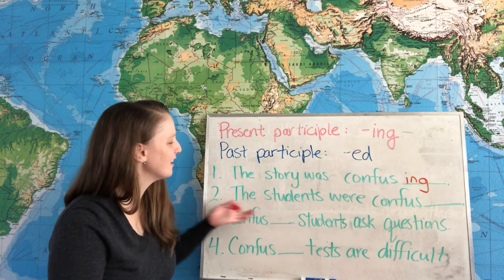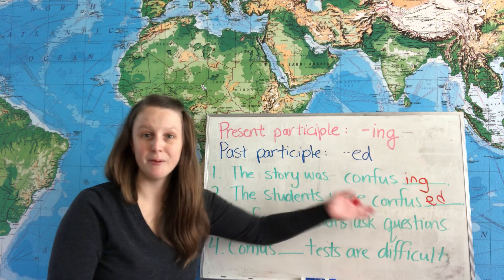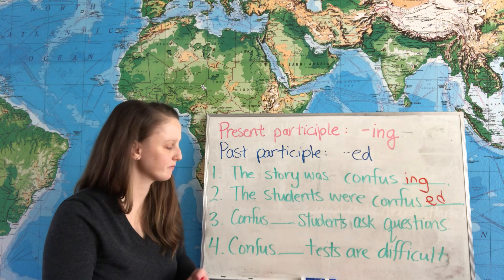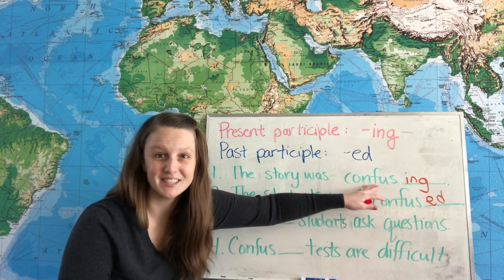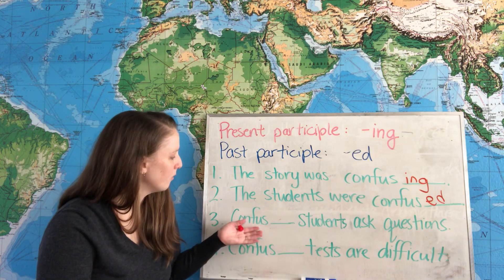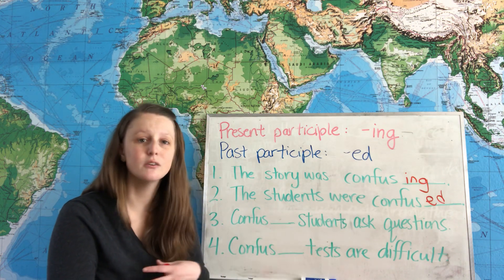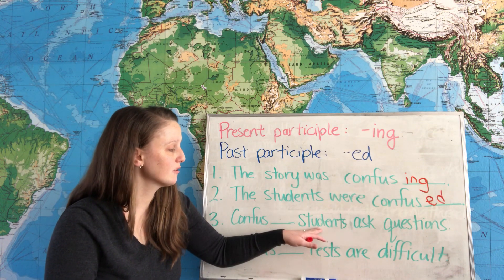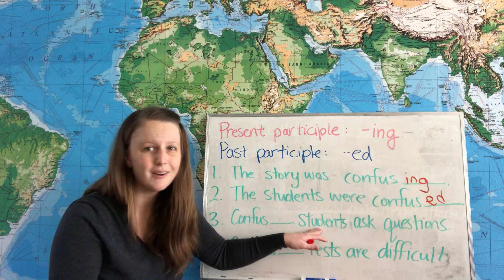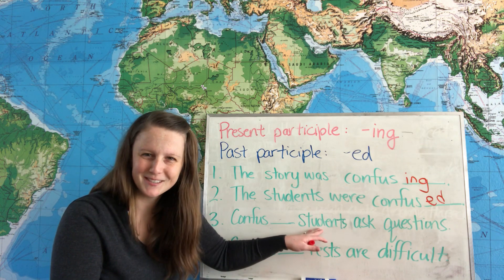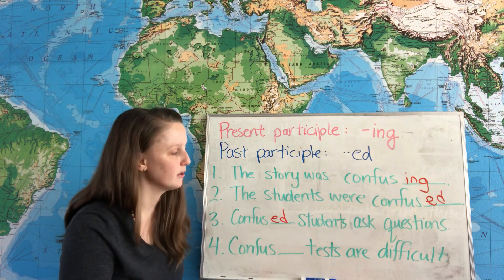Sentence number two: 'The students were confused.' That's how they felt when they read the story — they felt confused. Sentence number three shows us we can also use participial adjectives to modify a noun directly. Either 'confused' or 'confusing' students ask questions. Think about how you feel right before you ask a question — you're not a confusing student, you're a confused student. So: confused students ask questions.